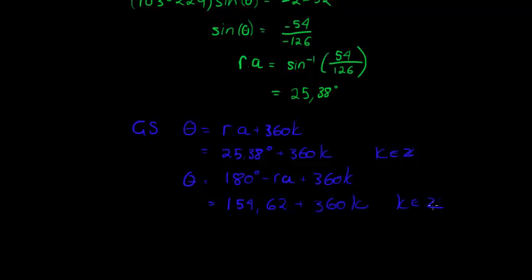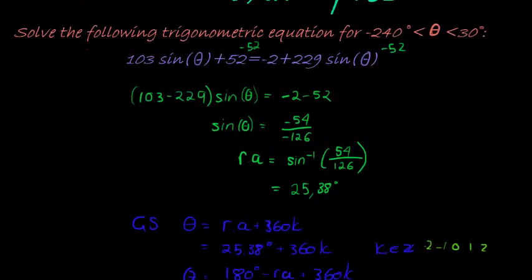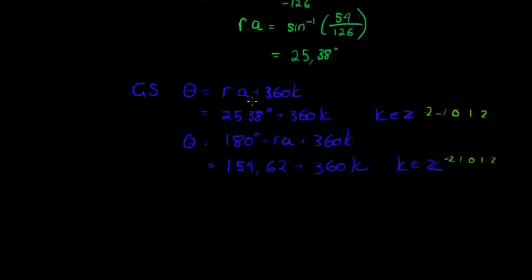And now, as before, as I've done quite a few times now, K is going to take the value 0, 1, 2, etc., and negative 1, negative 2, etc., until I get to the value that falls outside of my interval. My interval this time being negative 240 degrees and 30 degrees. So let's start with the first one. So theta is going to be an element of the following set.